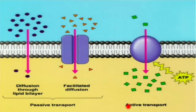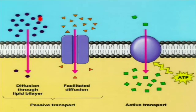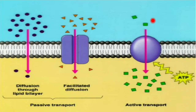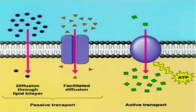In passive transport, substances move from high concentration to low concentration without the utilization of energy. In active transport, substances move from low concentration to high concentration with the utilization of energy. Active transport is facilitated by membrane-bound proteins called pumps.